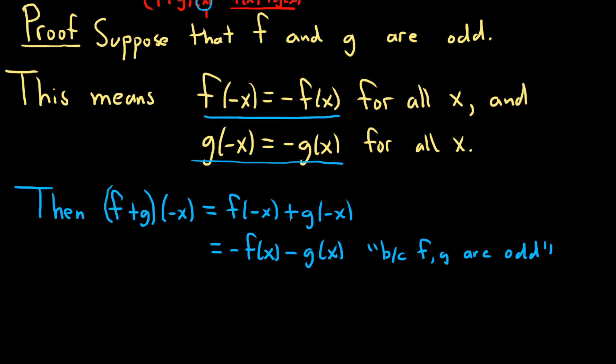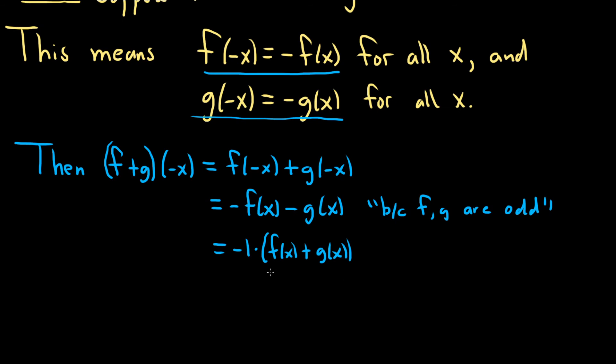We're trying to show that this equals -(f+g)(x). We can pull out a negative one and write it as -[f(x) + g(x)]. This is the definition of -(f+g)(x). So the function f+g takes negative x and gives us -(f+g)(x). This shows that f+g is odd.